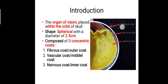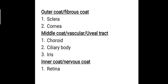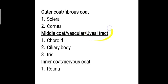The outermost layer is the fibrous coat, while the middle layer is the vascular coat, which is composed of vasculature. The innermost is the nervous coat, composed of nerve fibers. The outer fibrous coat consists of the sclera and cornea; the middle vascular coat, otherwise known as the uveal tract, consists of the choroid, ciliary body, and iris; while the inner nervous coat consists of the retina.